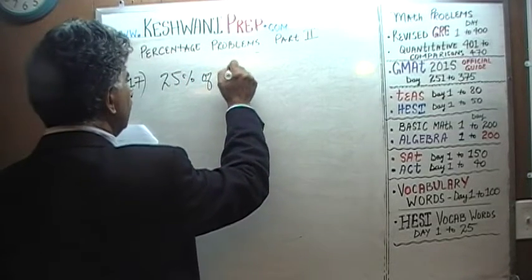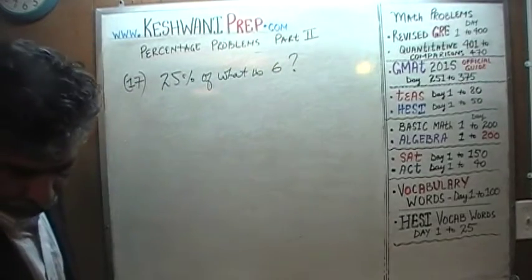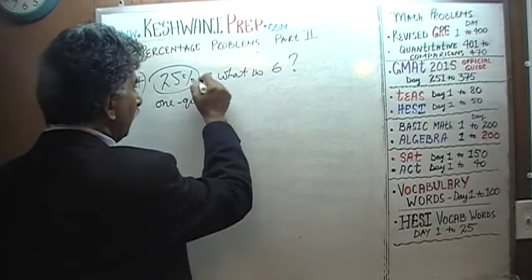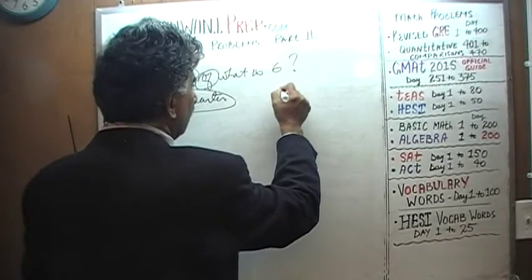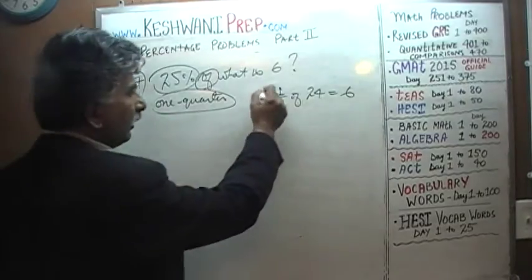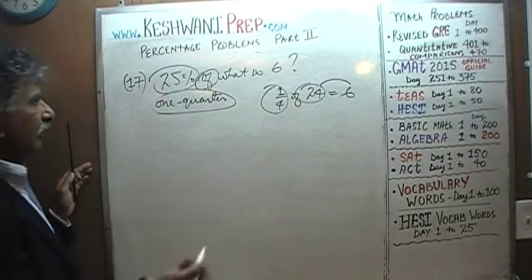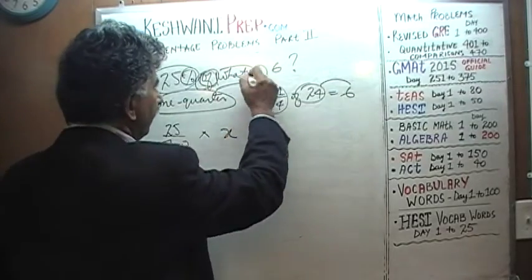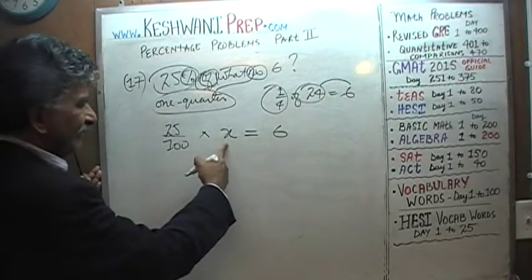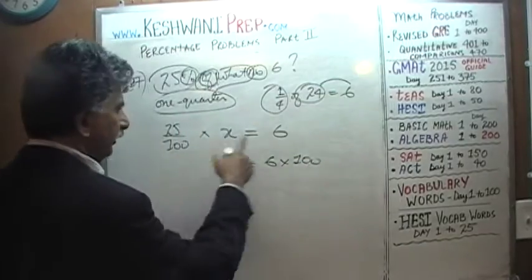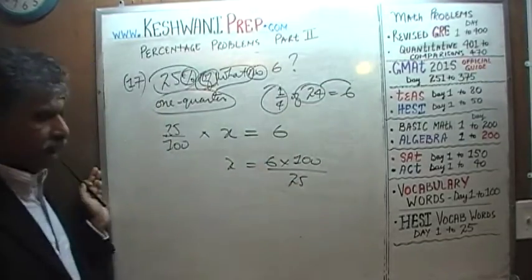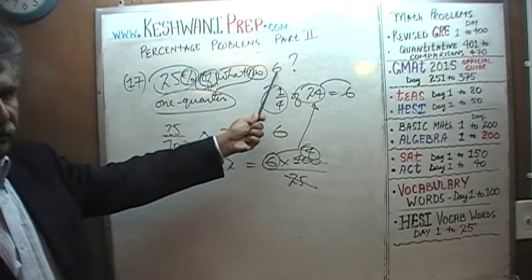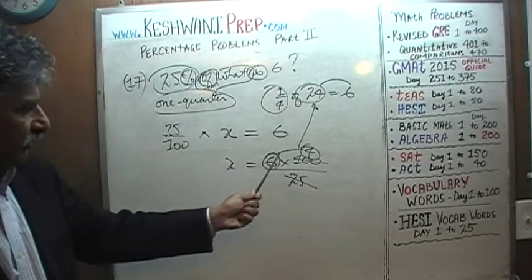Number 17: 25% of what is 6? 25% is the same as one quarter, so: one quarter of what is 6? One quarter of 24 is 6 — very simple. Formally: 25 over 100 times x equals 6, so x equals 6 times 100 over 25. Divide top and bottom by 25: 100 becomes 4, and 4 times 6 is 24. Makes sense, because if 25% of something is 6, the whole must be four times 6, which is 24.